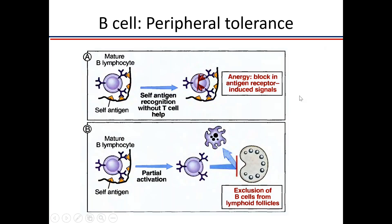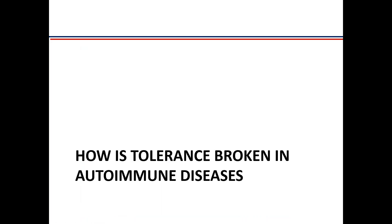For peripheral B cell tolerance, B cells predominantly in the lymph node that interact with self-antigen only get partially activated and may not reach the follicle where B cell proliferation occurs. So God has tried to make a very perfect system: most self-reactive T and B cells are deleted in their primary organs — the bone marrow and thymus — and are not allowed to enter the periphery.